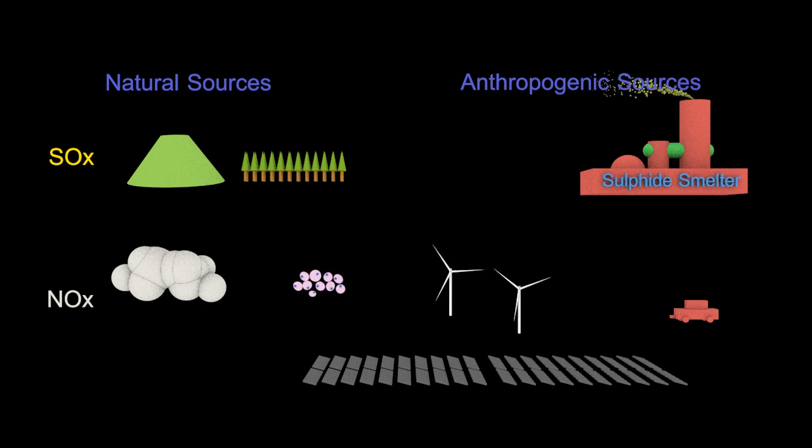Sulfide smelter, again you can treat the chimney exhaust and use an improved design to reduce sulfur oxide emissions.